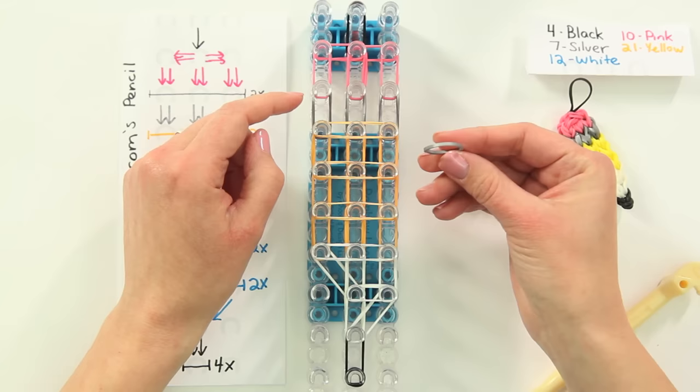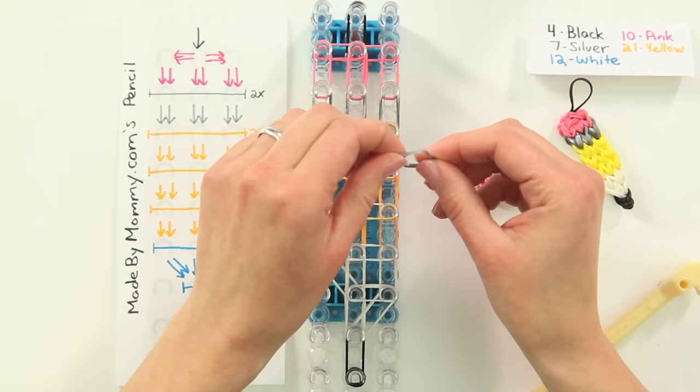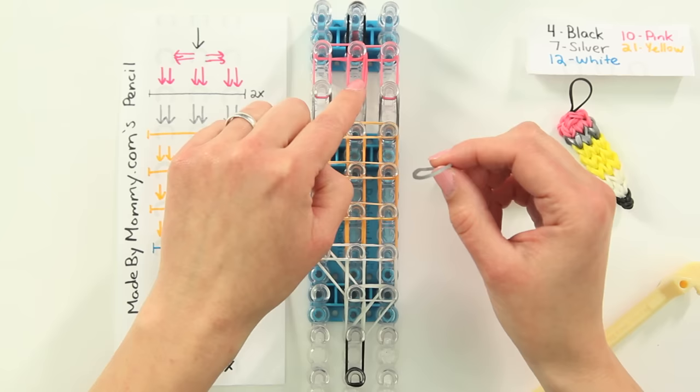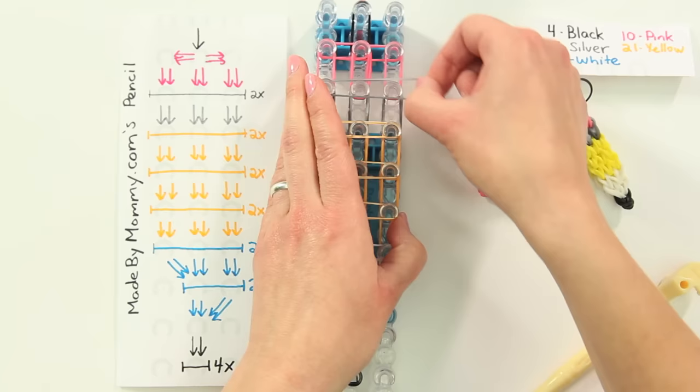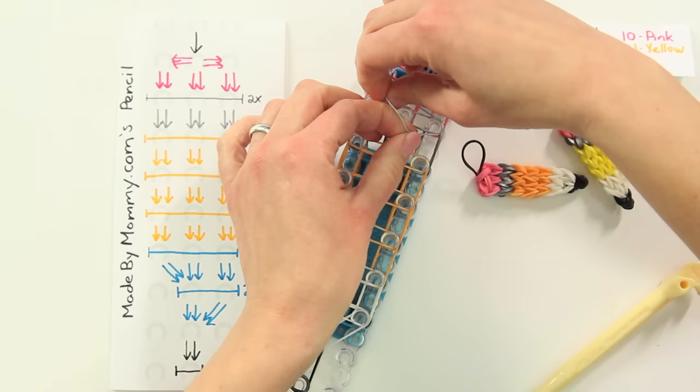We're ready to put the silver cap band on here. The silver rubber bands that came, even from Rainbow Loom, are less stretchy. If you're very worried about breaking bands, then use pink here instead of silver, because the silver ones are much more likely to break when you pull them like this. There we go.